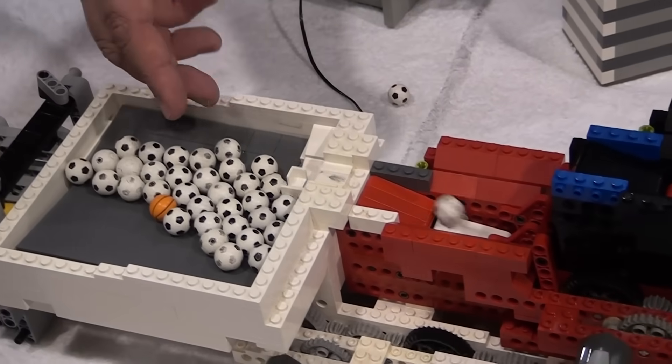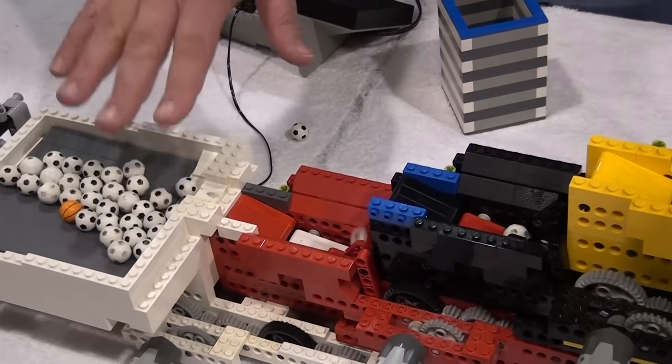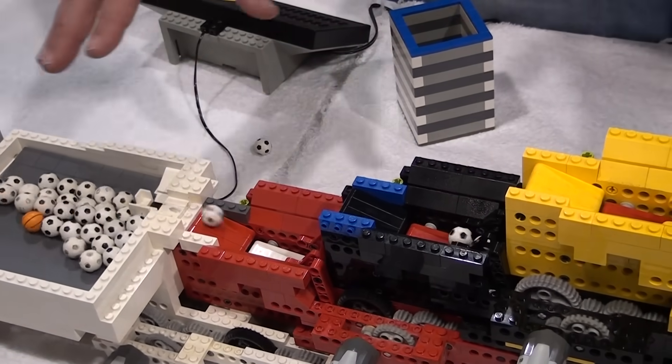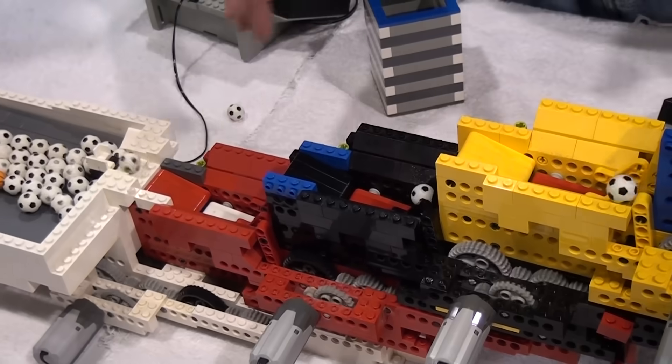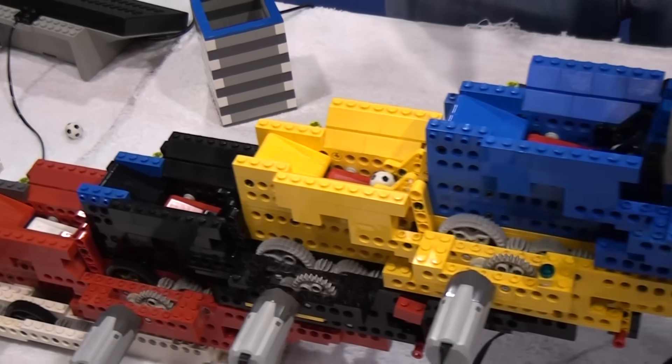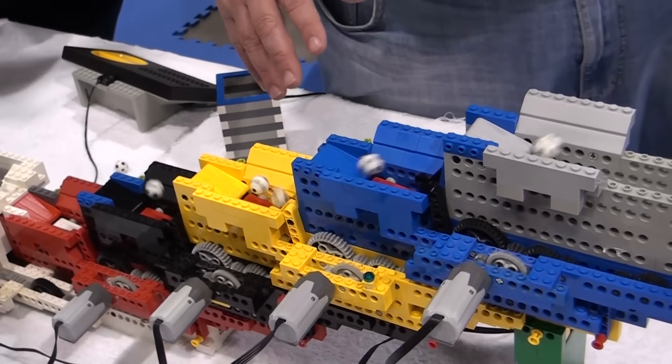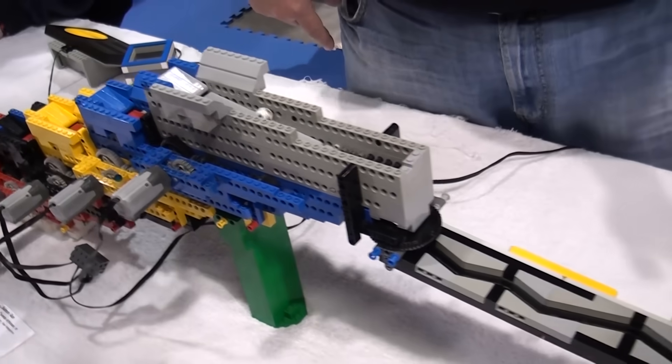Then we get to another little one ball single step module, again Tom Atkinson's. Then his little four ball hopper here, moving the balls up. This is a really cool module we've always loved.